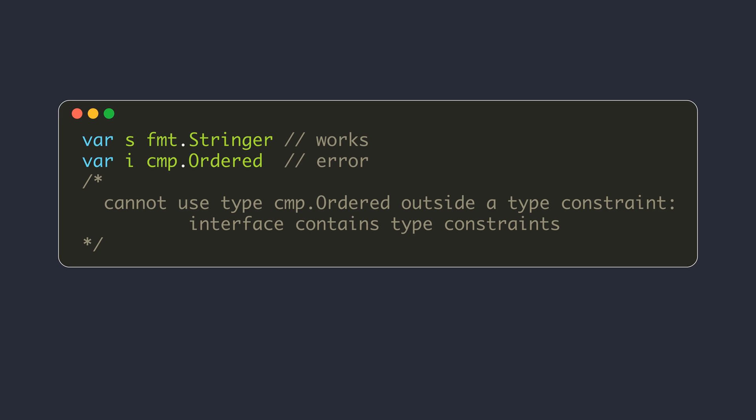With the introduction of generics, there are some changes to the concepts related to interface types. Before version 1.18, you could use all interface types as value types. After version 1.18, some interfaces can only be used as type constraints. An example of such a constraint-only interface is the ordered interface, which is a constraint that permits any ordered type.